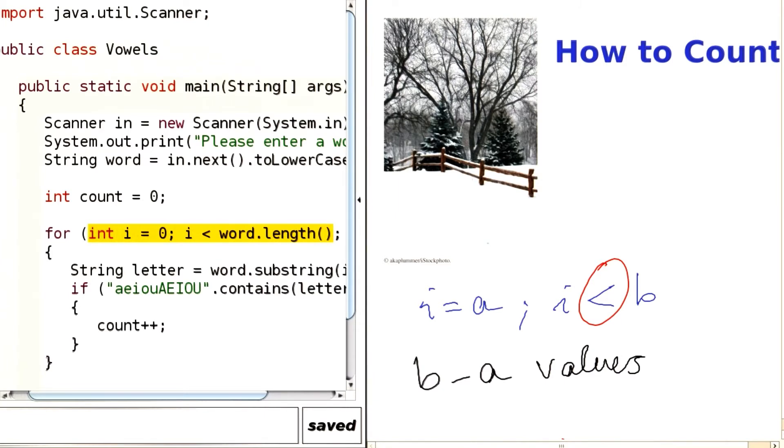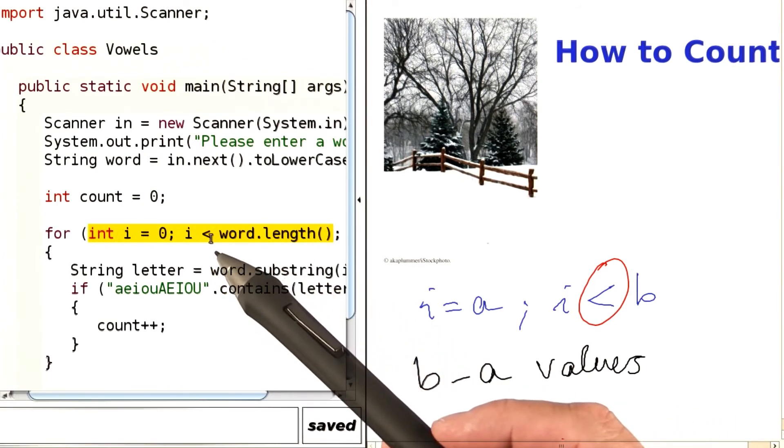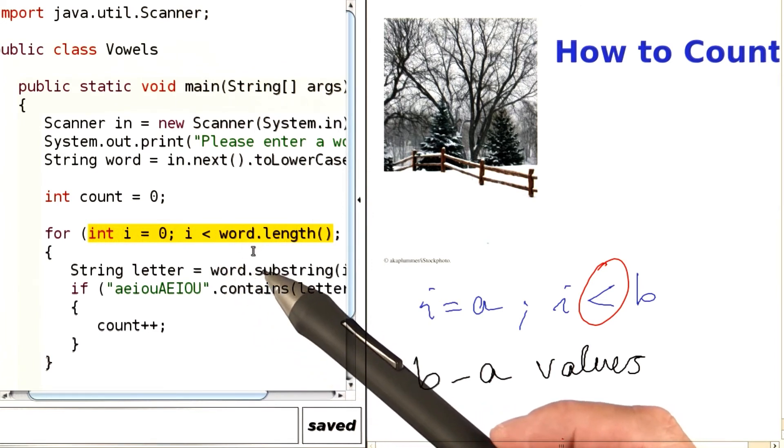For example, now look at your left. There is the program that looks at all of the letters in a string, and when you look at the bounds, you again notice a less than sign here. We go less than the length of the word.